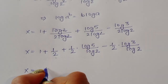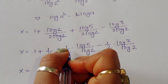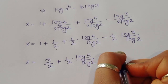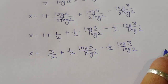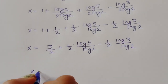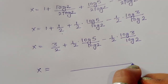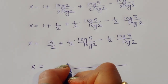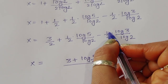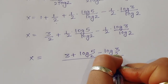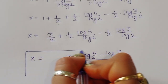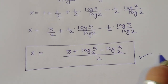We get x equals 1 plus 1/2, giving 3/2, plus (1/2)·log(5)/log(2) minus (1/2)·log(3)/log(2). Taking 1/2 as common and expressing in base-2 logarithm form, x equals (3 plus log₂5 minus log₂3) divided by 2. This is the final answer.